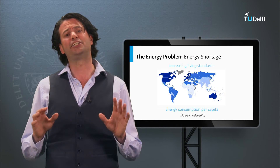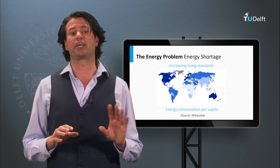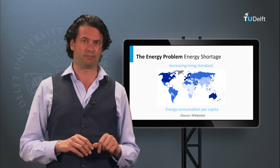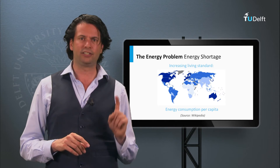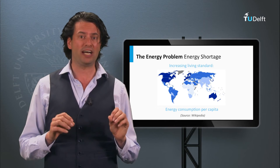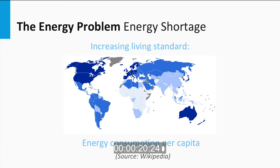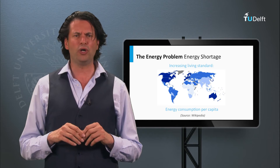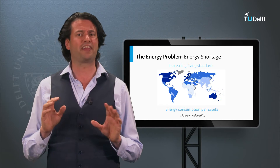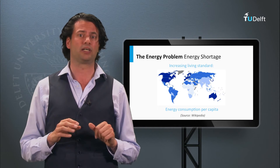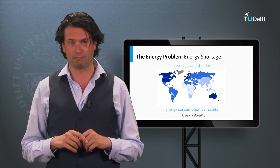In addition, the energy consumption per capita is linked to the living standard of a country. In 2010, the US used around 230 kilowatt hours of energy per capita per day, whereas countries in Africa, like Nigeria, only used one tenth of this energy — around 23 kilowatt hours per day per capita.